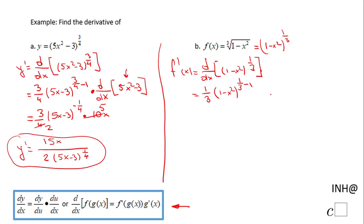I'm gonna have 1/3 times (1 - x²) to the power of 1/3 - 1, times the derivative with respect to x of 1 - x². Let's see what we have here. We have 1/3 times (1 - x²) to the power of -2/3.